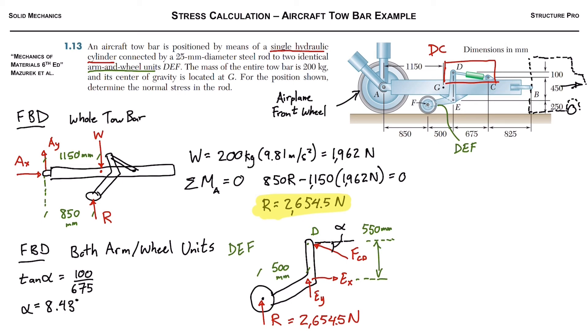Now next, with this alpha, we're able to sum the moments about E because we have the two components. The vertical component of FCD is not going to play in because it's going to go through the point E. It's the horizontal component which is going to be acting at 550. Sum of all the moments about E is equal to 0.